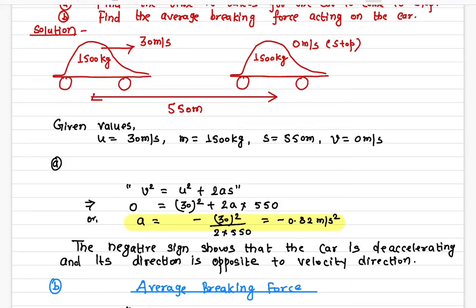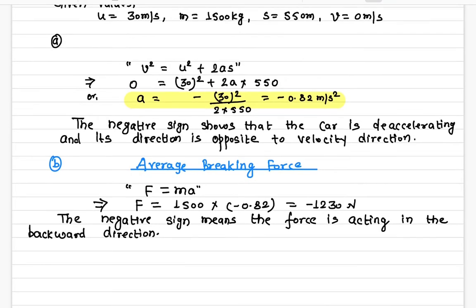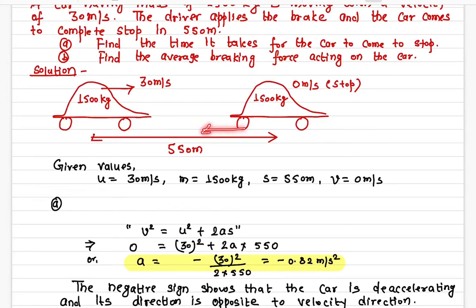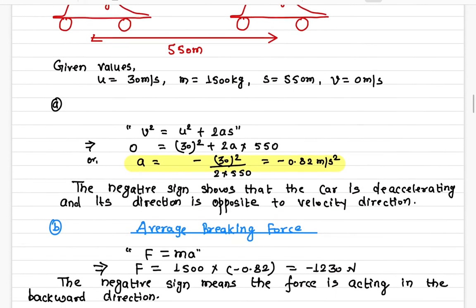Once we know the acceleration, it's fairly simple to find the average braking force using Newton's second law of motion: F = ma. The mass is 1500 kilograms and the acceleration magnitude is 0.82 m/s², giving a braking force of 1230 Newtons. The negative sign means the force is opposite to the direction of motion — something has to drag you back to make you stop.